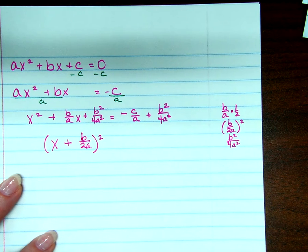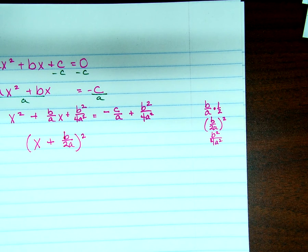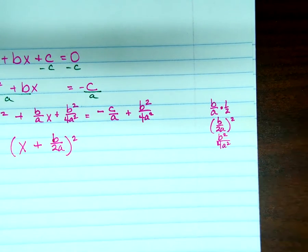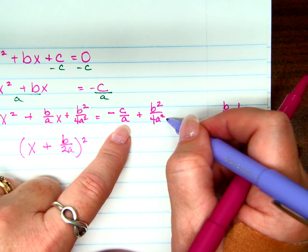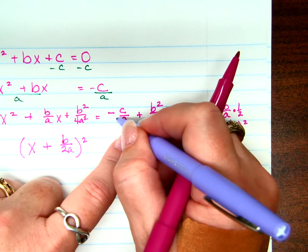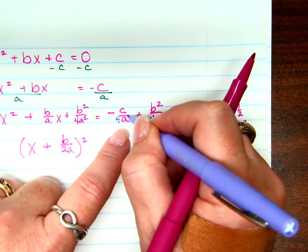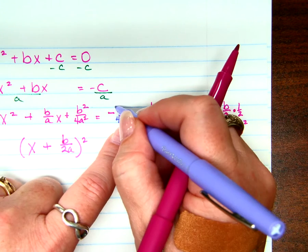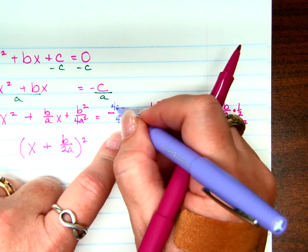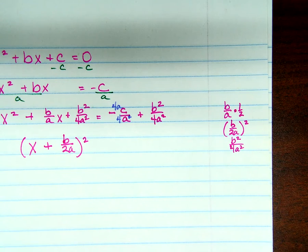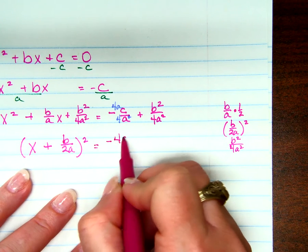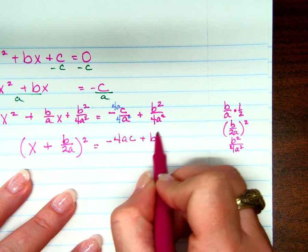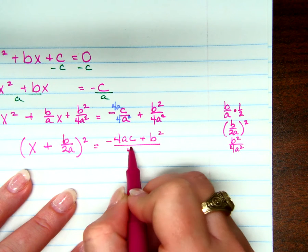Now I need to be able to add these two fractions. In order to add fractions, I need a common denominator. Common denominator between a and 4a² is just 4a², but this one needs a 4 and an a so that it's 4a². So that means I have to multiply the numerator also by 4a. So I have 4ac in the numerator. So what I have is negative 4ac plus b² over 4a².